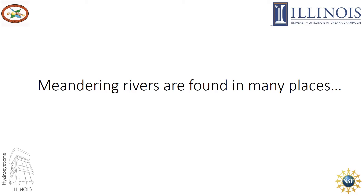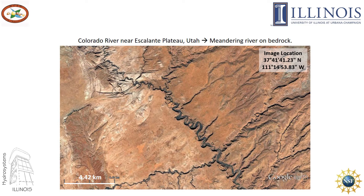Meandering rivers are found in many places. This is the Colorado River near Escalante Plateau in Utah. It's a meandering river on bedrock. It can also change its path, but it takes a lot more time because the bed and walls of the channels are made of rock. Parts of the bed and walls of the channel may be chipped away when hit by stones moving with the flow.